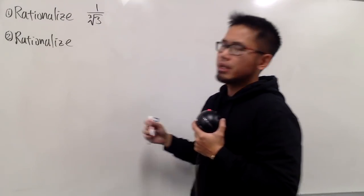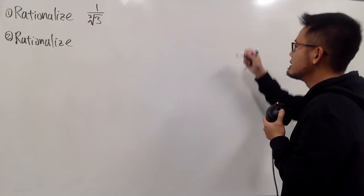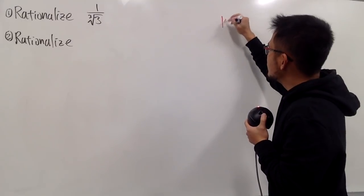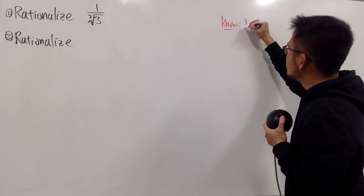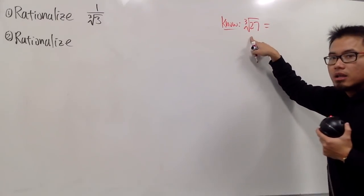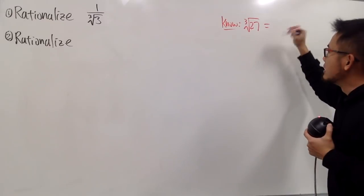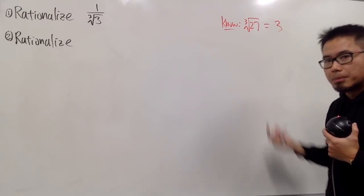And now, when we have the cube root of 3, let's just think about this carefully, and I'll put this down on the side. In fact, we know this much better. If we have the cube root of 27, this right here, we can get a nice number 3, because 27 is a perfect cube.